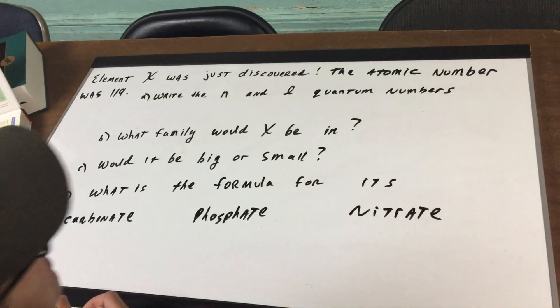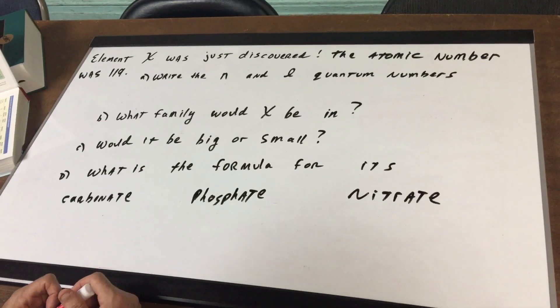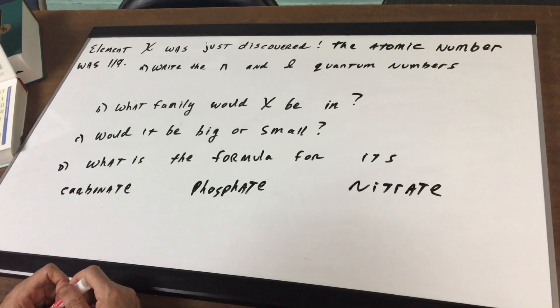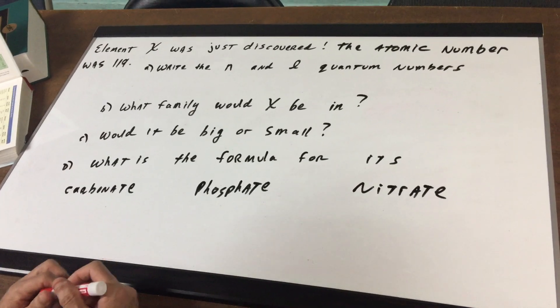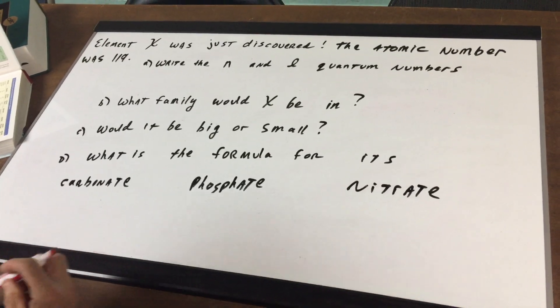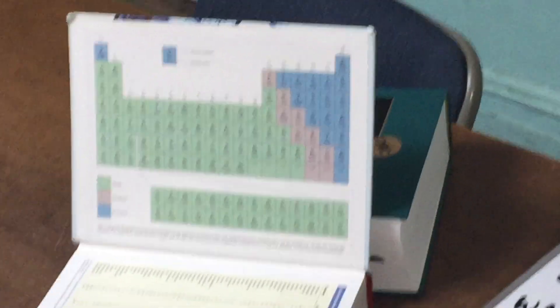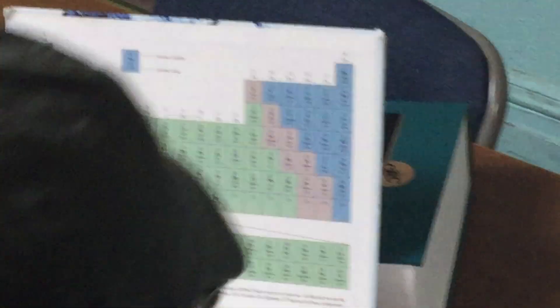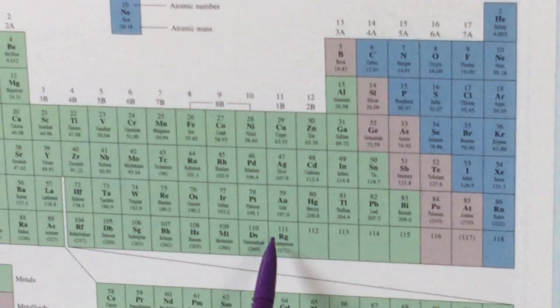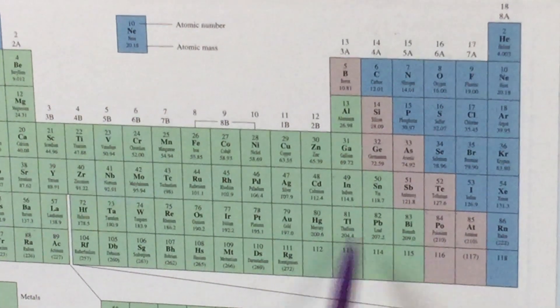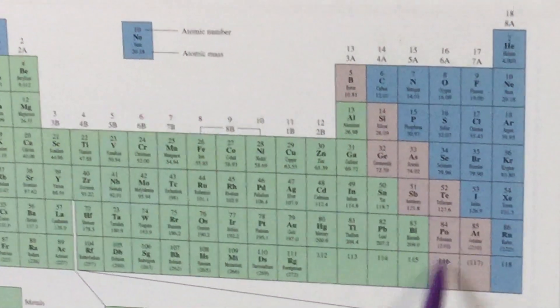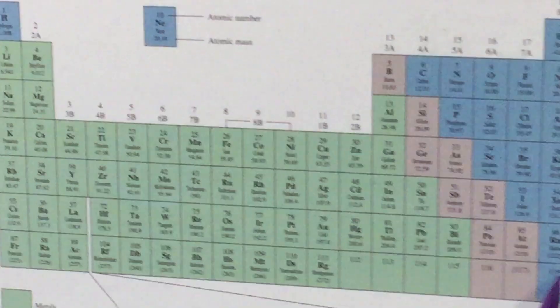It says that element X was just discovered. The atomic number was 119 and what I want to do is to write the n and the l quantum numbers. The first thing we need to do is to see on the periodic table where 119 would be and what period it's located in. So if you could come over here and take a look at the periodic table that you'll get on the DAT exam, you would click on the icon and up comes the periodic table and you can see it goes to 118.